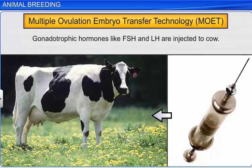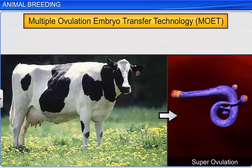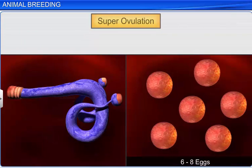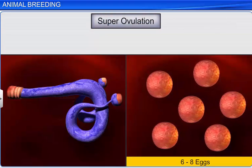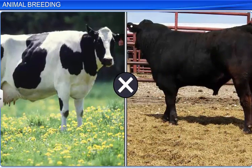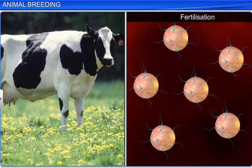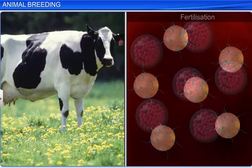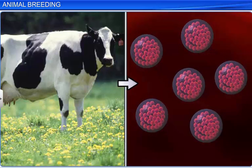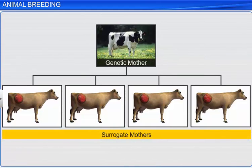MOET involves the administration of gonadotrophic hormones like FSH and LH to female animals, which induce maturation of follicles resulting in super ovulation. Super ovulation is the production of six to eight eggs instead of one egg. The super ovulated female is mated with a superior male either through natural mating or artificial insemination, resulting in fertilization of all the eggs. When the fertilized eggs reach the eight to thirty-two cell stage, they are non-surgically removed and then implanted into different surrogate mothers for further development, in a process called embryo transfer.